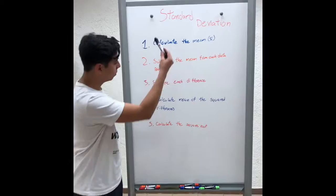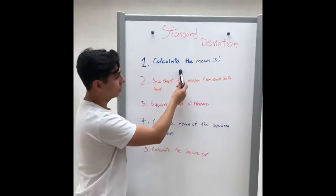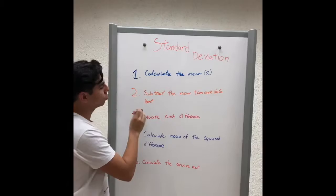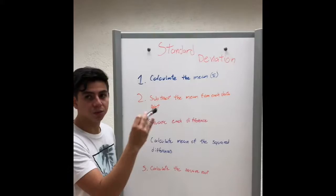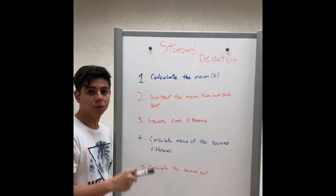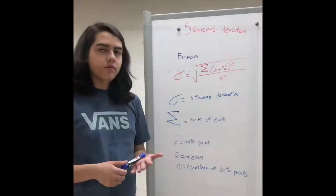And remember, these are the five steps to solve a standard deviation. First, you calculate the mean that is represented by the x with a bar on top. The second step, subtract the mean from each data point. Third step, square each difference. Fourth step, calculate the mean for the square differences. And at the end, you only have to do a square root.